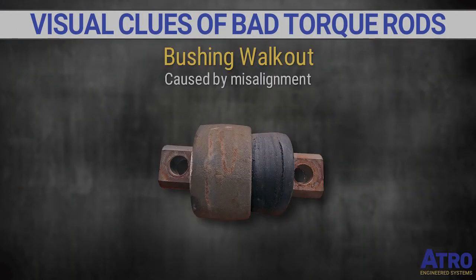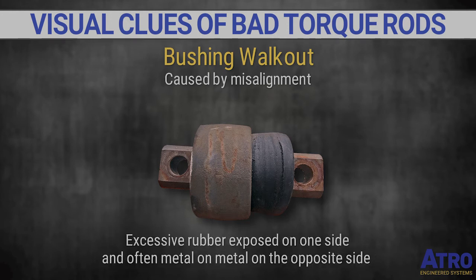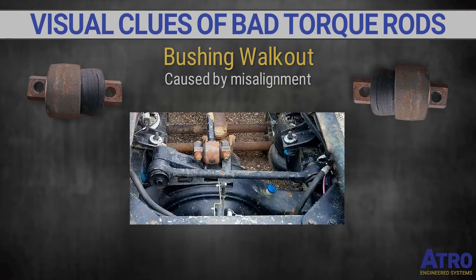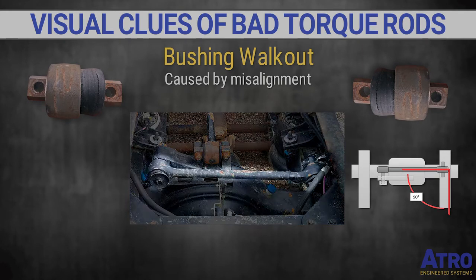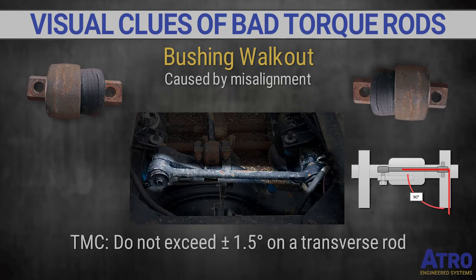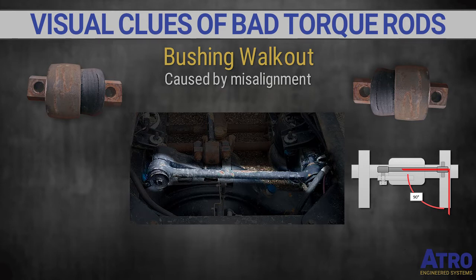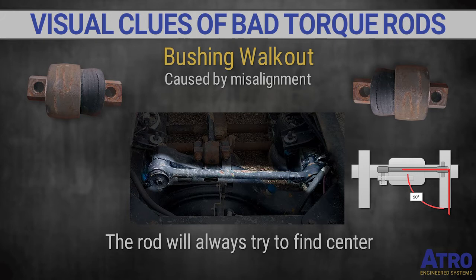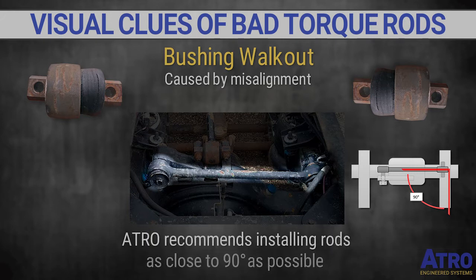Bushing walkout is caused by misalignment, characterized by excessive rubber exposed on one side and often metal on metal on the opposite side. Transverse rods must be perpendicular to the frame rail when installed. The Technology and Maintenance Council recommends not exceeding plus or minus 1.5 degrees on a transverse rod. While the rod will always try to find center, because of varying parameters, Atro recommends installing transverse rods as close to 90 degrees as possible.